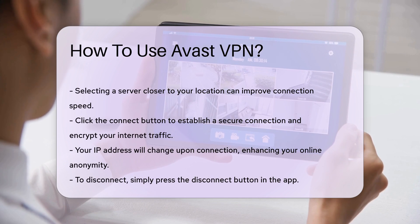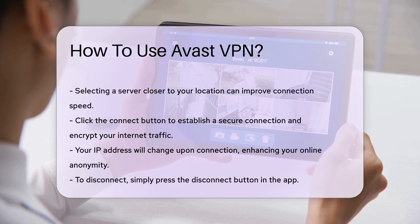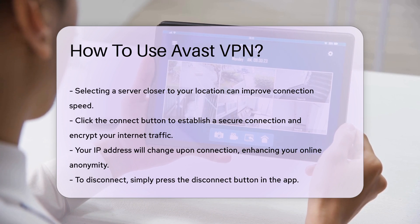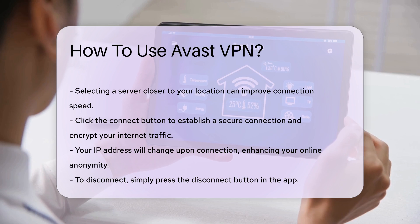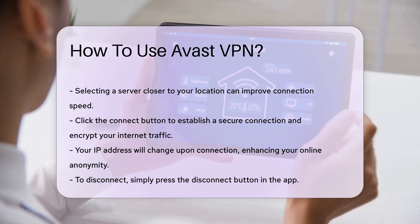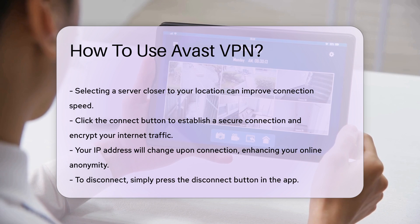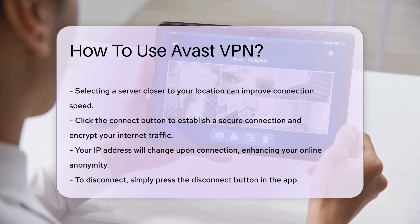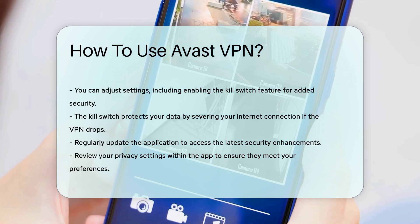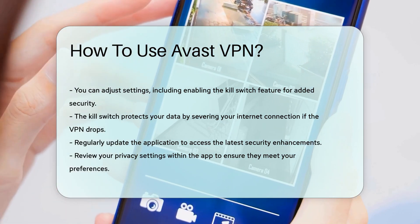The application will establish a secure connection, encrypting your internet traffic. You will notice a change in your IP address, which helps maintain your anonymity online. To disconnect, simply press the disconnect button in the app. You can also adjust settings such as enabling the kill switch feature, which ensures that your internet connection is severed if the VPN connection drops, protecting your data from exposure.